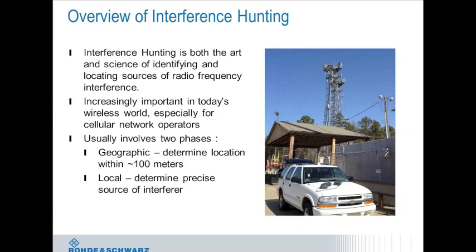Generally speaking, there are two phases in interference hunting. The first involves determining that interference is taking place and the rough geographical location of the interferer. In cellular networks, base station statistics such as uplink RSSI will often narrow down the location to a single sector — this is also the 'driving around' phase. The second phase is the local or 'walking around' phase, where you've narrowed the location to about 100 meters and continue hunting on foot using portable receivers and handheld antennas.